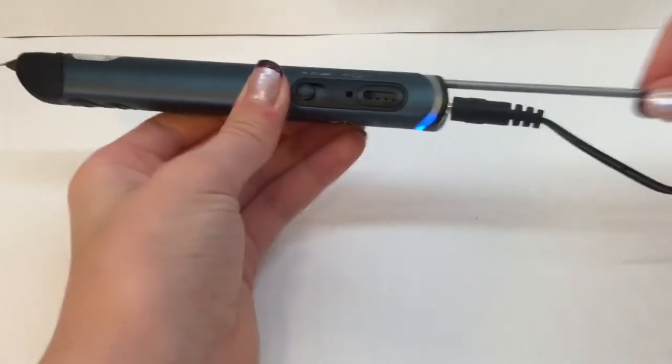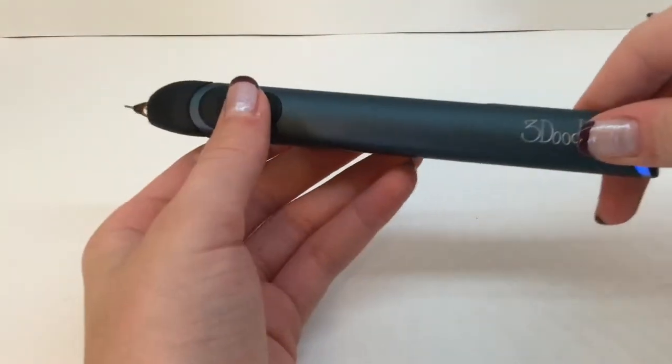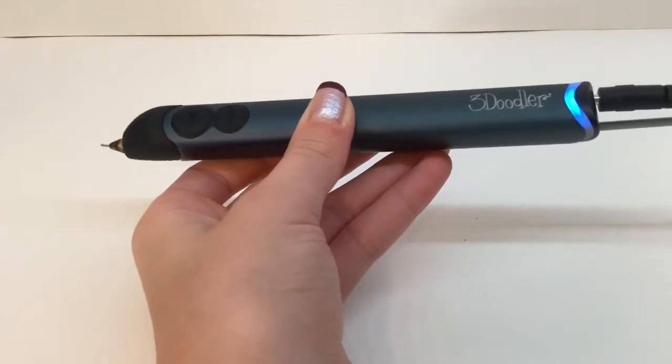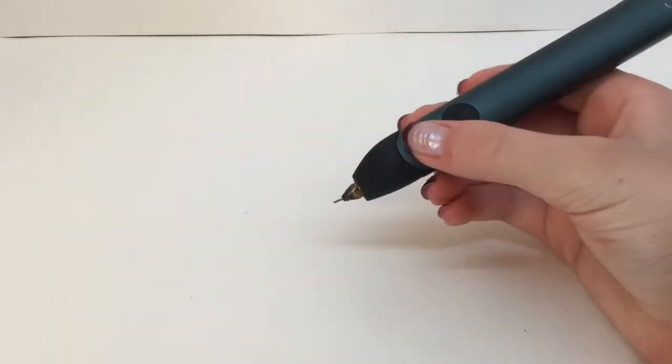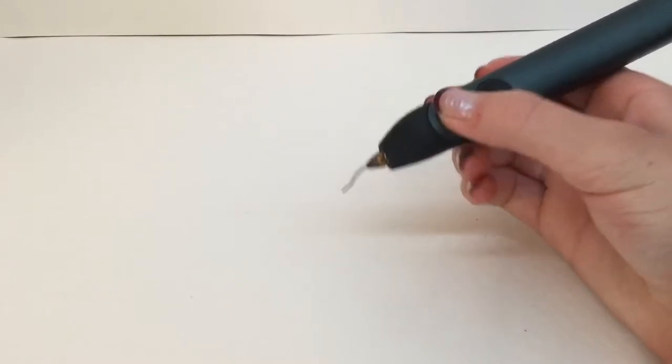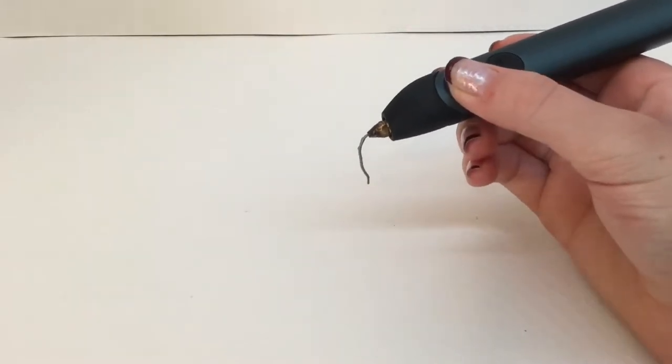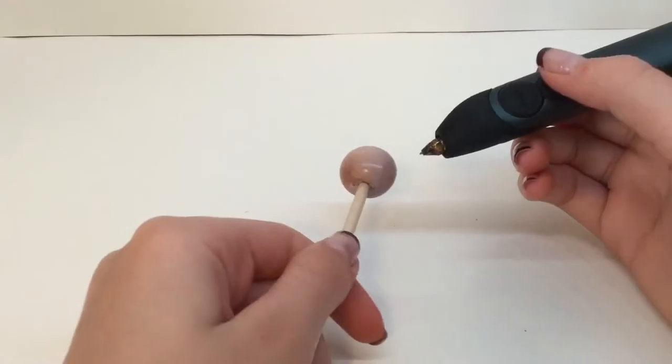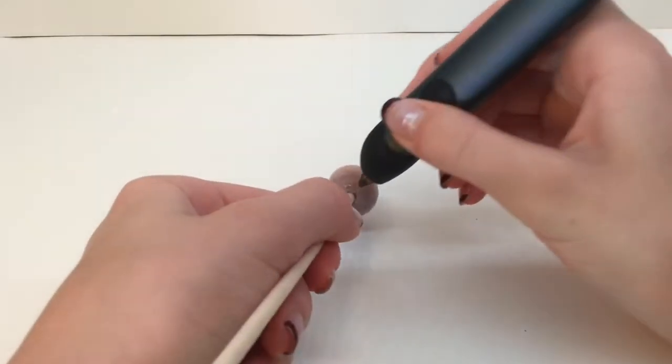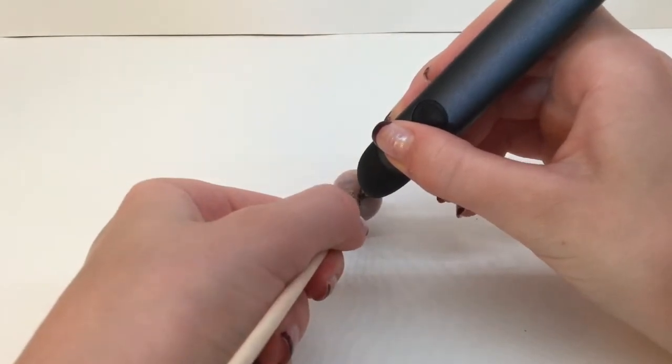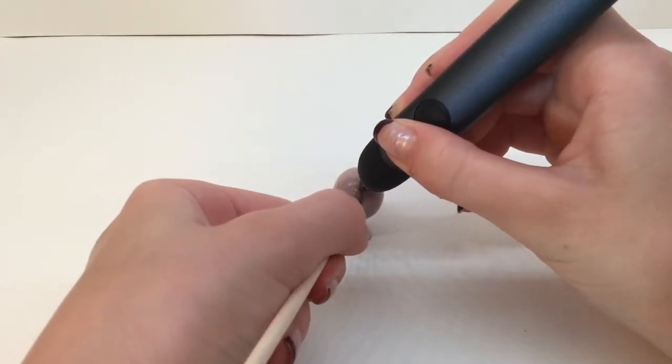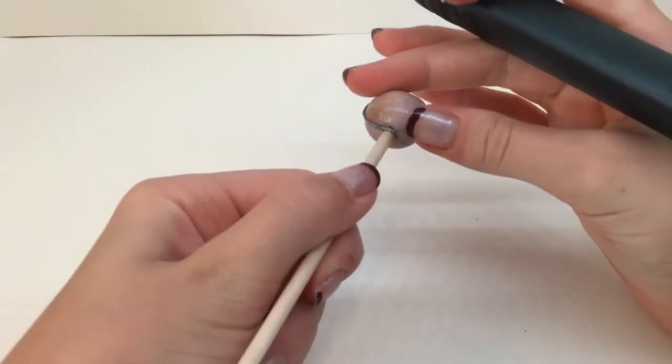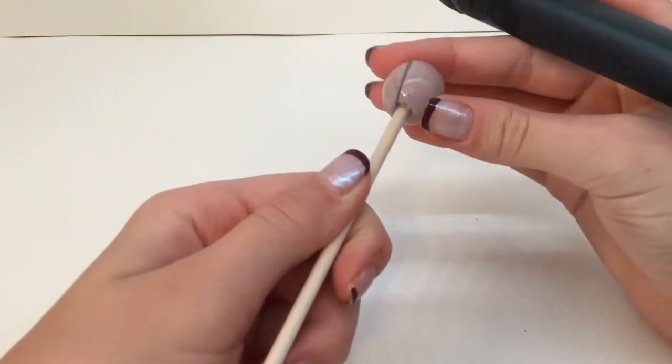Once your pen is ready, put in the plastic of your choice—I'm using a silver color. Let it come out through the front, then press it one more time to stop it. Now you can start on your bead by putting a circle all the way around the center. I'm on slow mode right now but later I'll switch to fast.